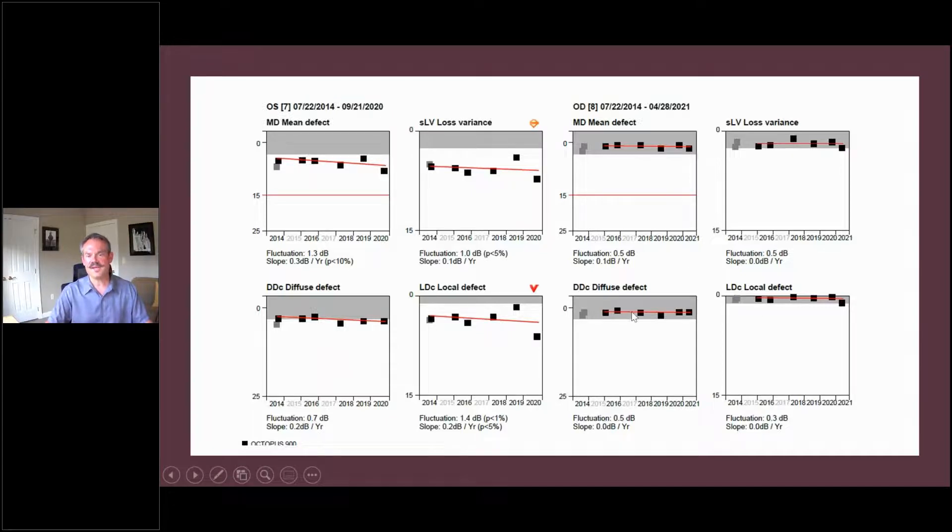The right eye is saying that the field is stable. But the left eye is being flagged—it's saying this local defect is larger by a significant amount. So that really is being flagged.